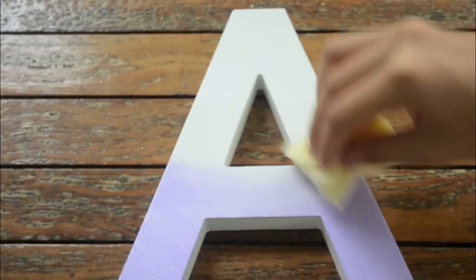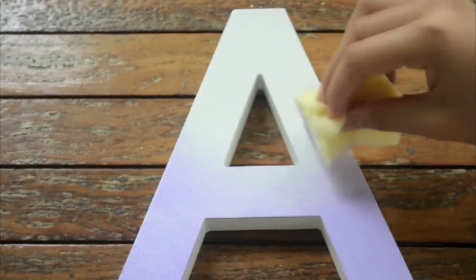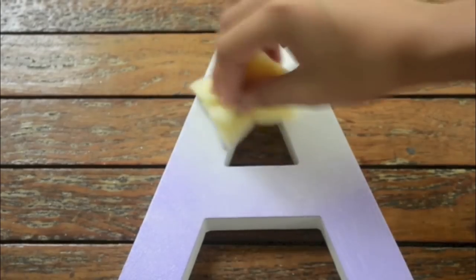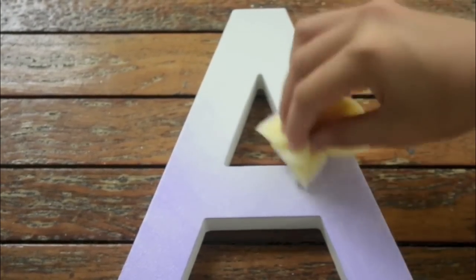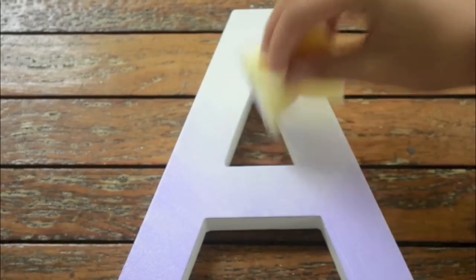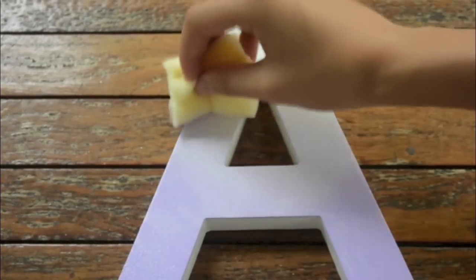This doesn't really take long. The thing that you want to do is fill up all the white gaps in between the purple. So as your paint runs, as your sponge runs out of paint, bring it up more to blend it more into the letter.